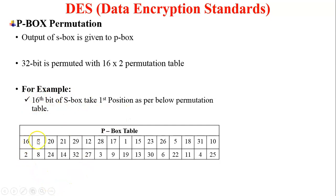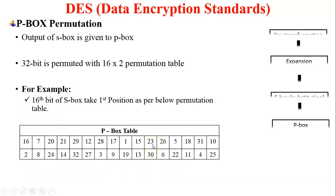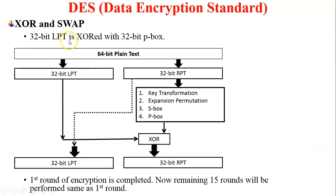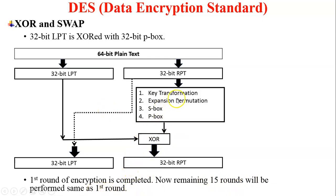Next is XOR and swap. The 32-bit LPT is XORed with the 32-bit P-Box output. The P-Box output and the 32-bit LPT are both inputs to the XOR process. Both inputs are XORed and it generates 32-bit RPT, and the 32-bit RPT is swapped with the 32-bit LPT. The first round of encryption is now completed. The remaining 15 rounds are performed in the same way as the first round, since we must perform 16 rounds of encryption.